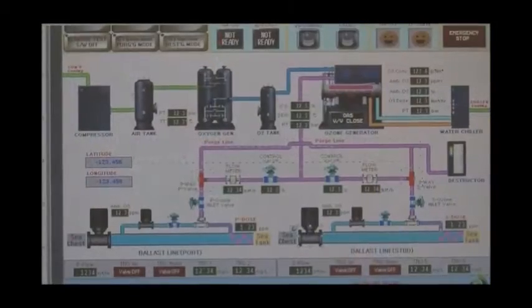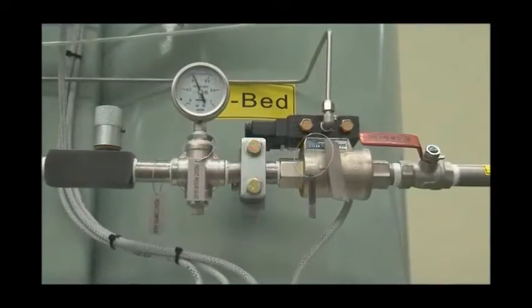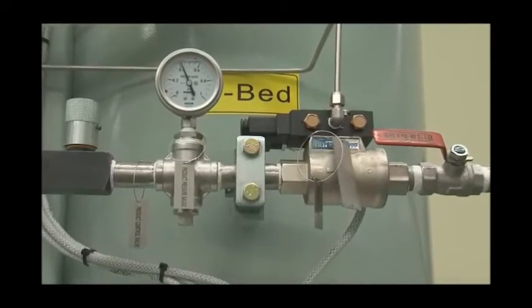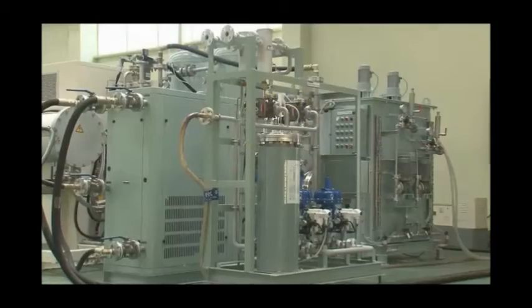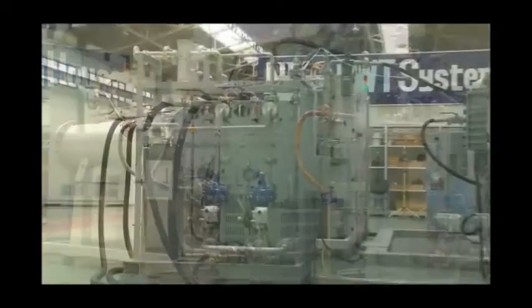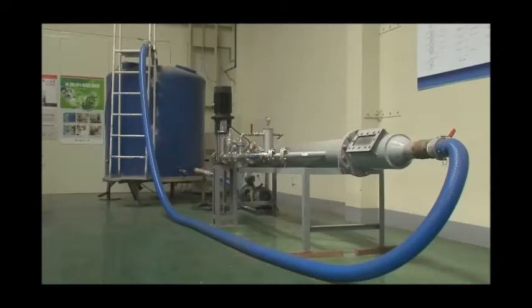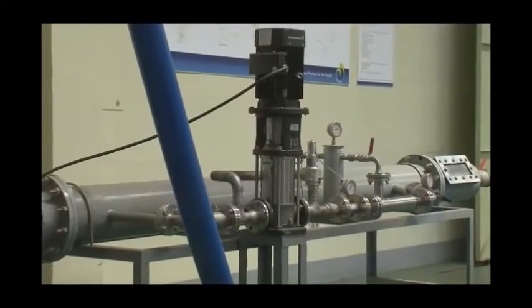All these systems can be set on the one skid foundation and completely assembled wired, tested in the shop before delivery, or individually seated and connected with a pipe according to the space to be installed in engine room or combination or on deck as convenient. Just ozone injection unit shall be installed at discharge side of ballast pump.